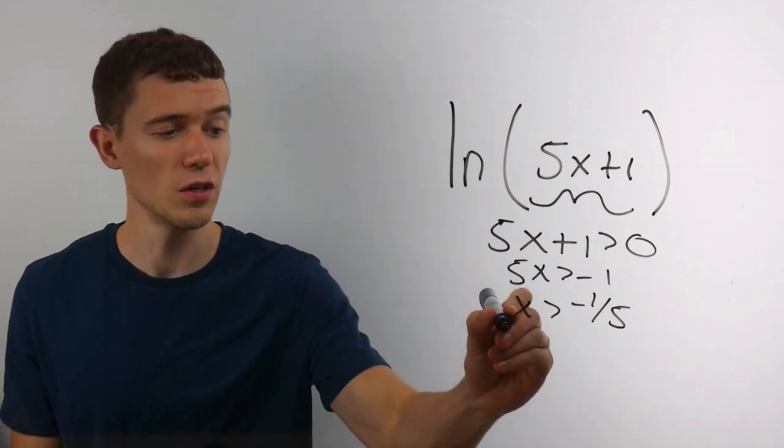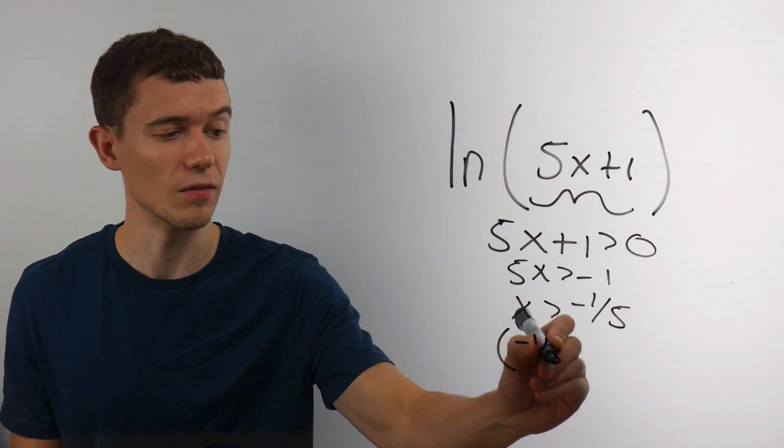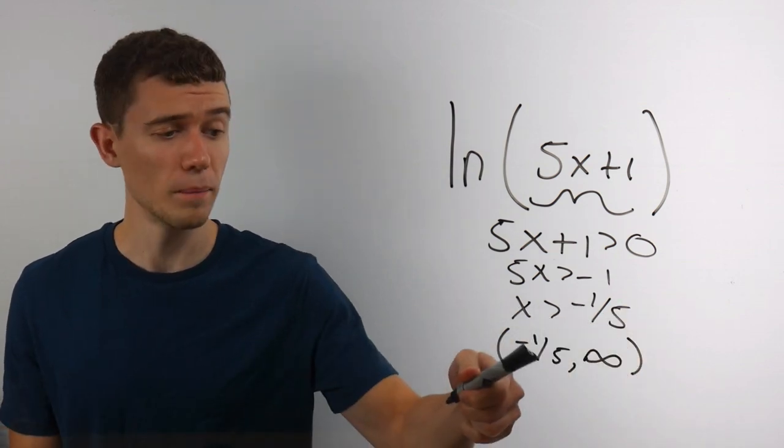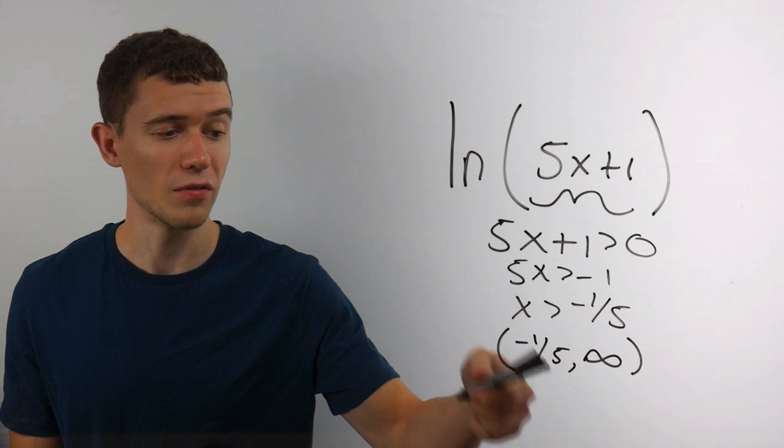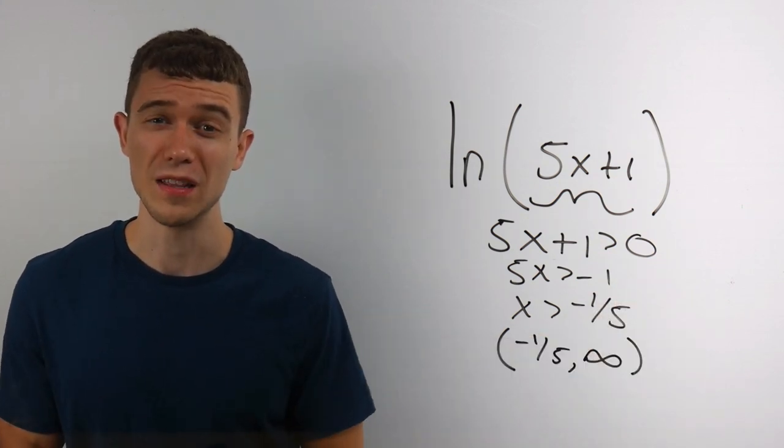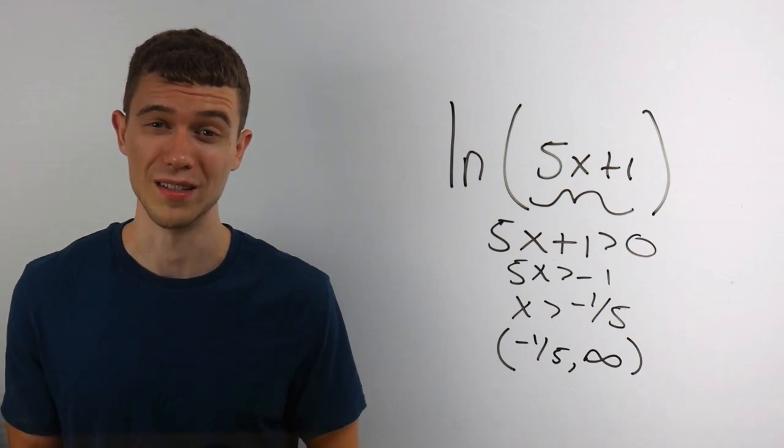If you want to use interval notation, you would write that as parentheses negative 1 fifth comma infinity. This says all the numbers from negative 1 fifth not included up forever. That's how you find the domain of log functions. We'll see you next time.